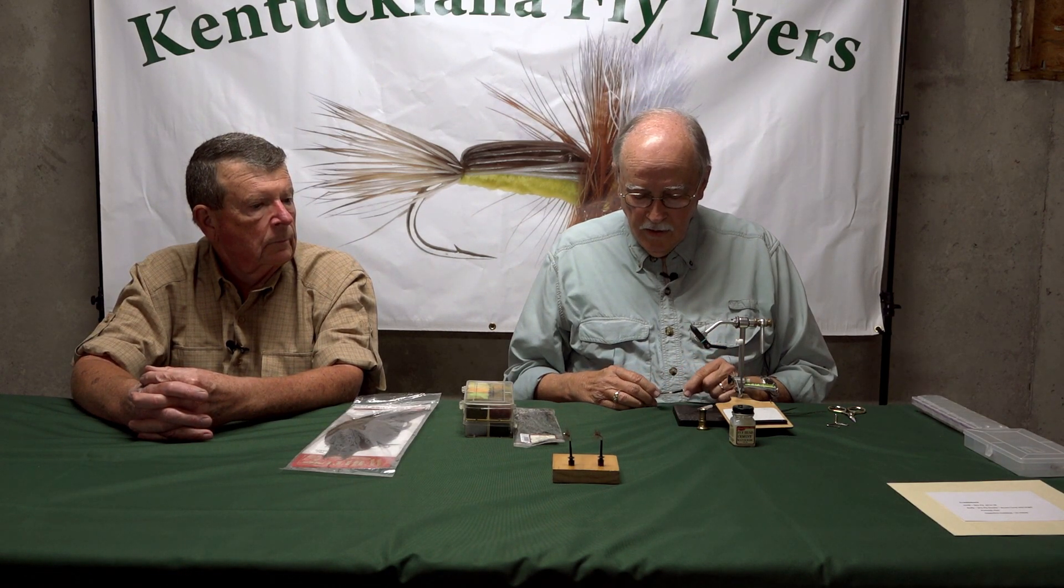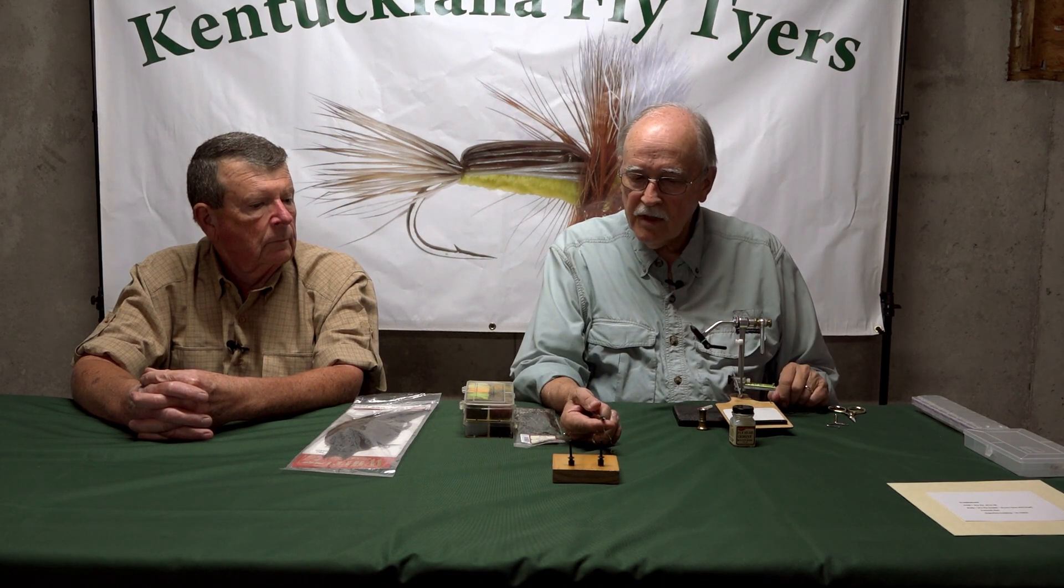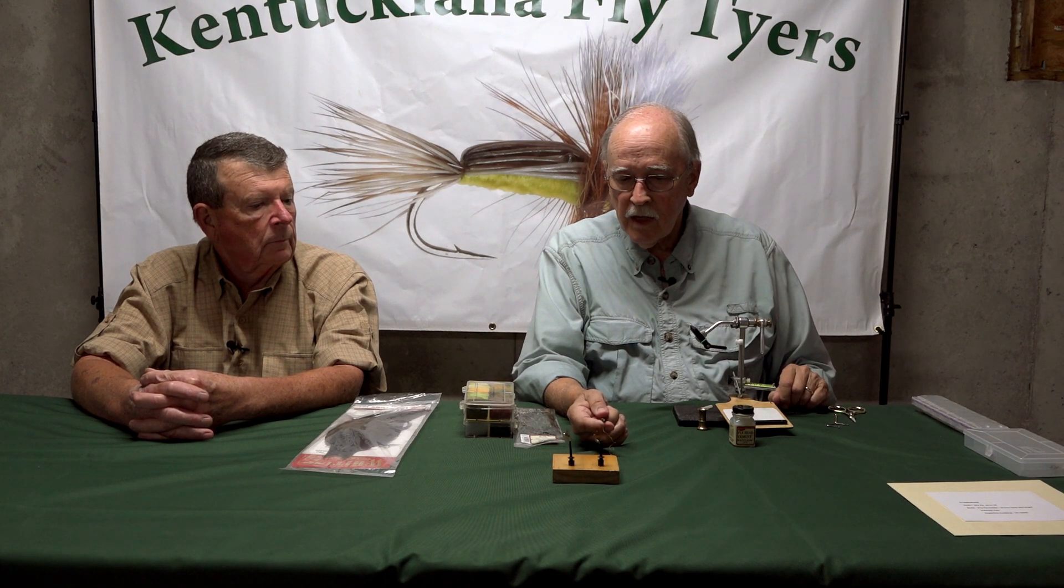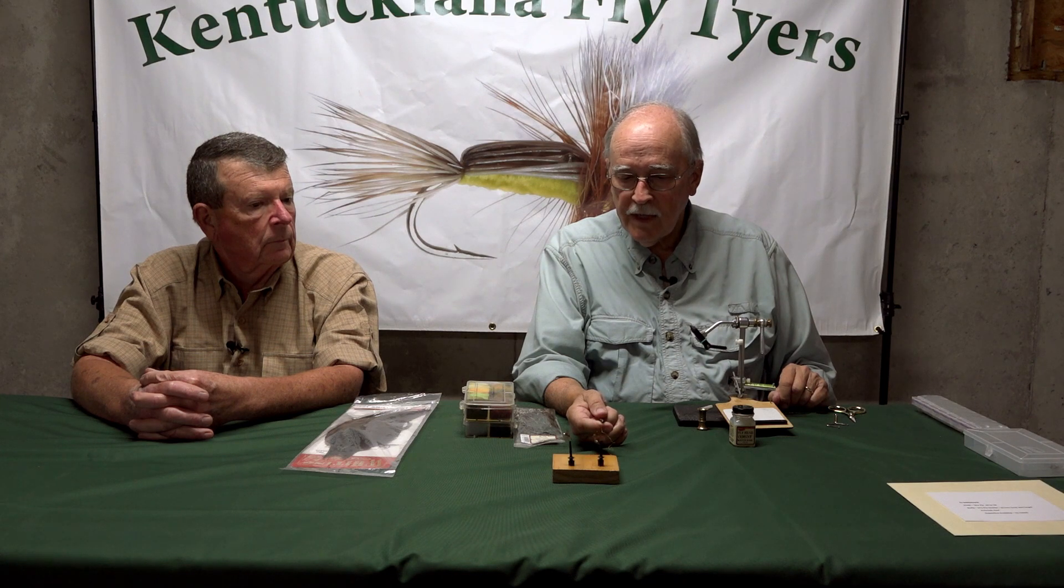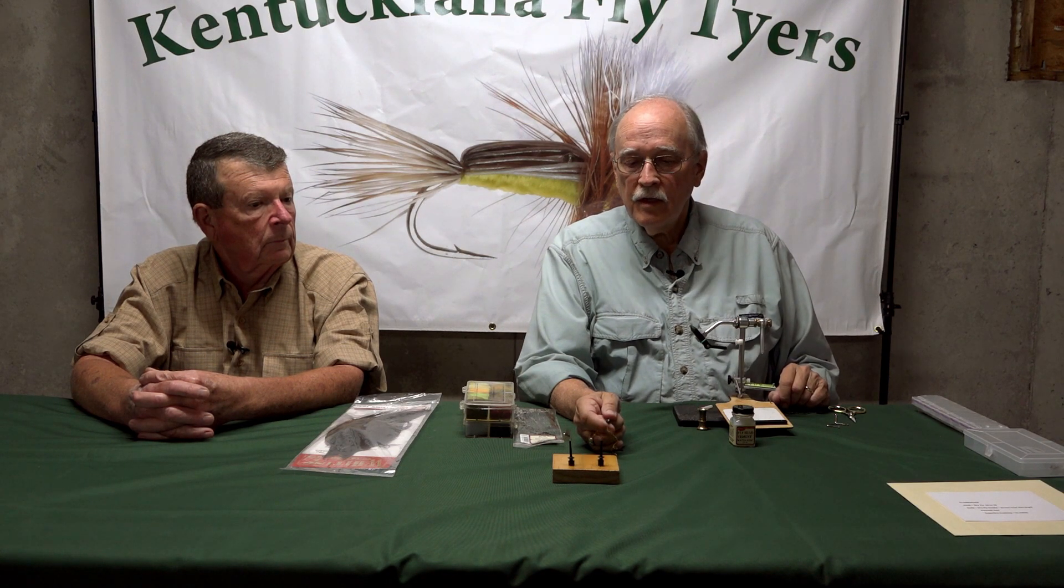I've got one in the vise here. I've turned the barb down already. We tie it with 6-aught thread. It's also tied in a number of different colors. The majority of them that you see will look about like this, some sort of a yellow or a light gold body. It's got peacock hurl in it and with a brown hackle. You also see them tied some with a grizzly hackle. The majority of the ones you see are like this.